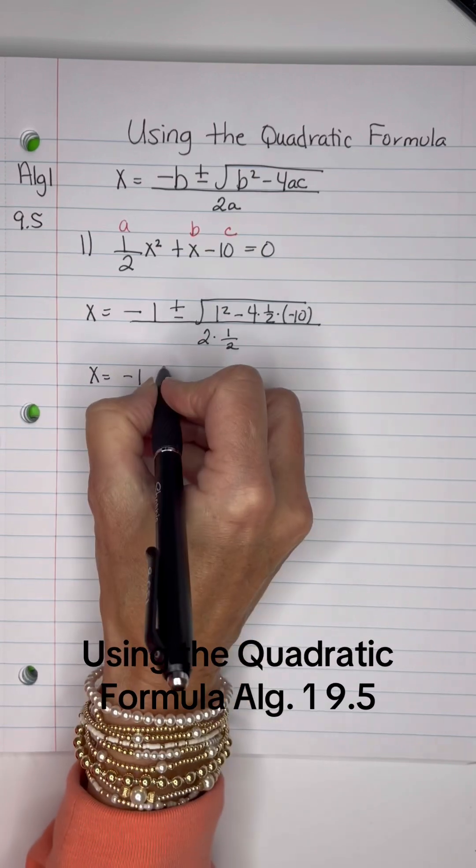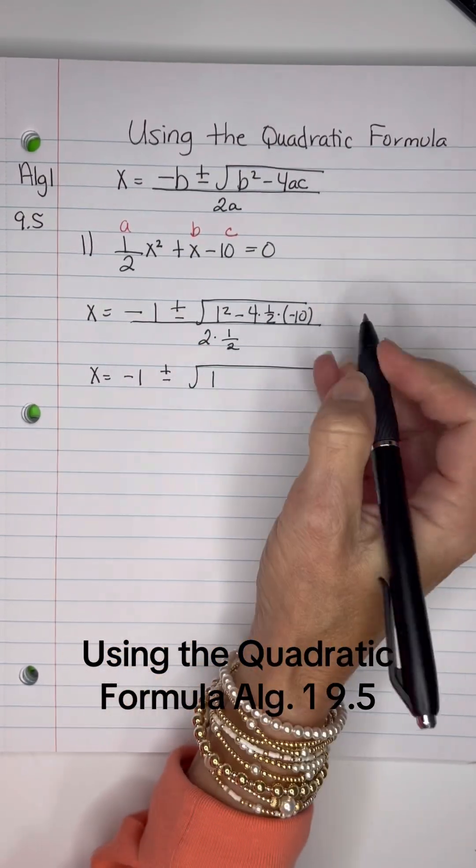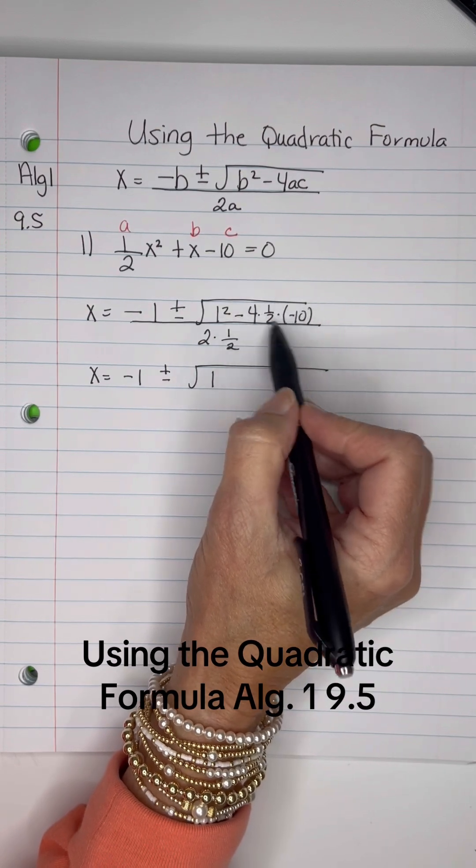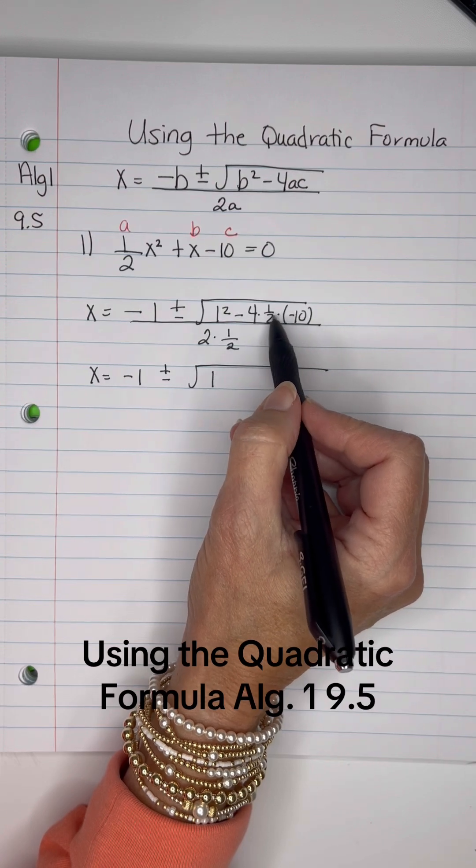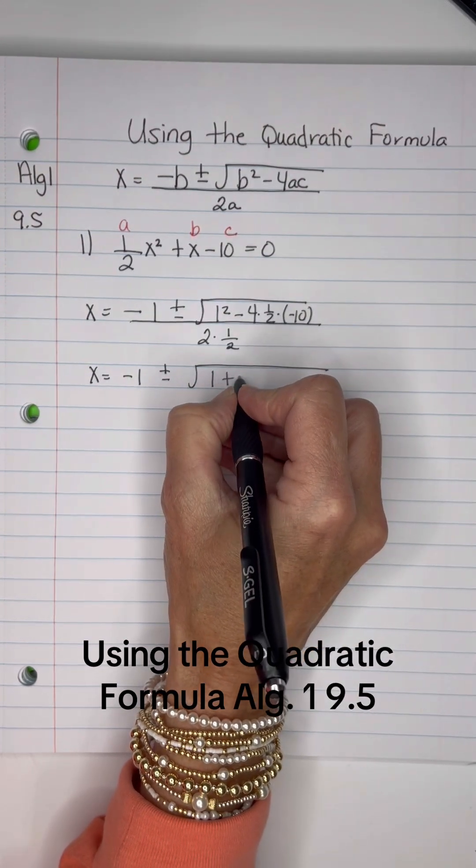So we have negative 1 plus or minus the square root, 1 squared is 1 and then I've got a negative times a negative, which is a positive and when we multiply all this together, I've got 40 divided by 2, 40 times 1 half is 40 divided by 2, which will be a positive 20.